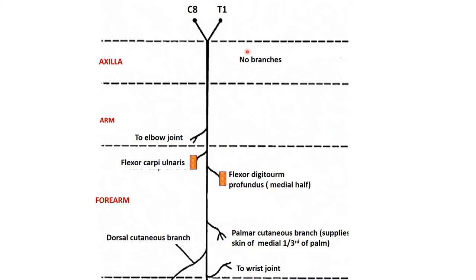Briefly, the root value of ulnar nerve is C8 and T1. In the axilla it gives no branches, and in the arm also it doesn't give any branches except sometimes to the elbow joint. In the forearm it supplies two muscles — we can say one and a half muscles — which are the flexor carpi ulnaris on the ulnar side and the medial half of the flexor digitorum profundus.